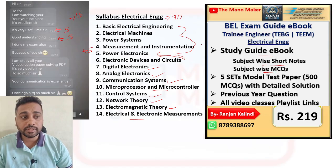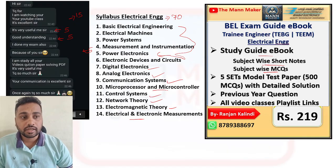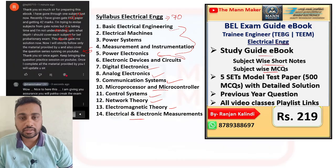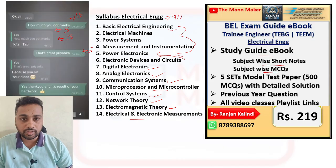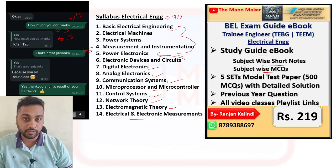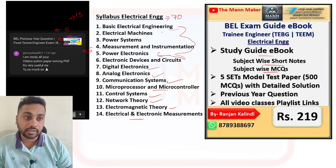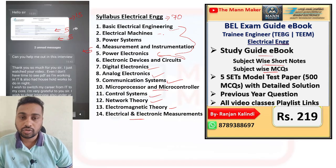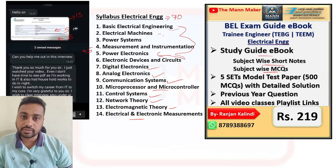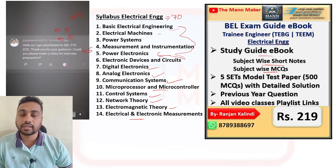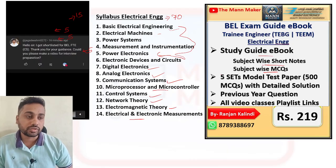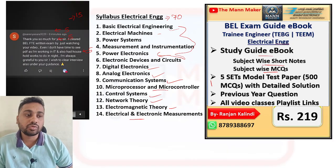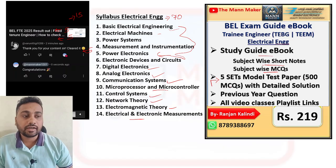Then you will get subject-wise MCQs with detailed explanation answers. For example, for basic electrical engineering there are key points, short notes, then MCQs related to basic electrical engineering. Then for electrical machines you will get short notes followed by MCQs with detailed solutions. Apart from this ebook, you are going to get 500-plus important MCQs.